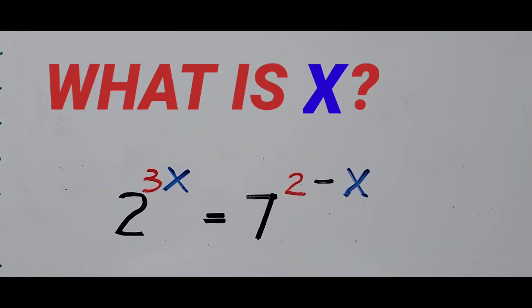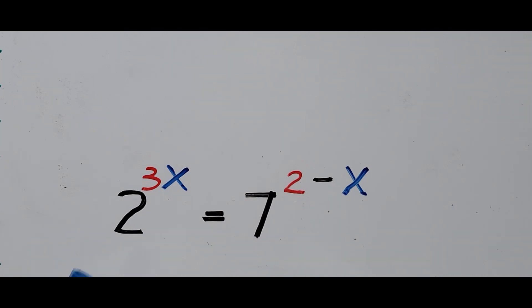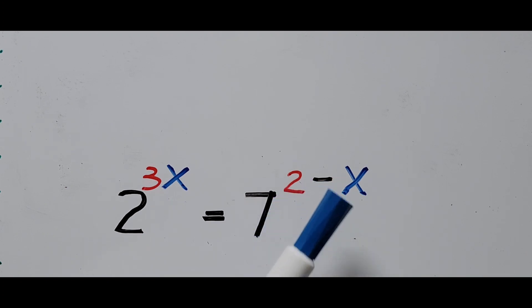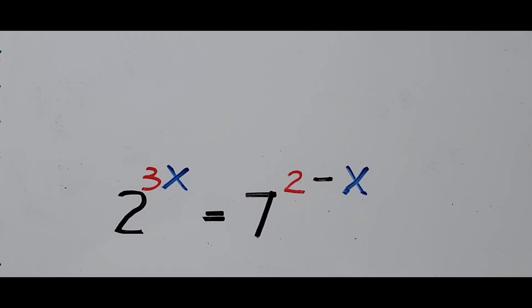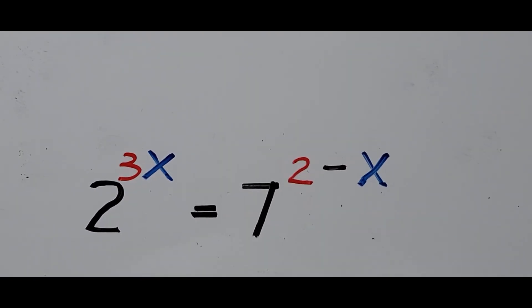Good morning everyone, this is Calciano Easy Path. We have another exponential equation to solve: 2 to the 3x equals 7 raised to 2 minus x, and we're solving for the value of x.